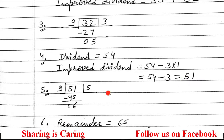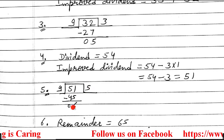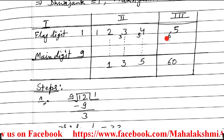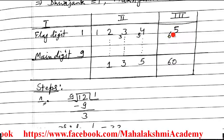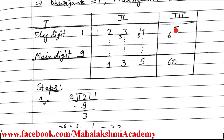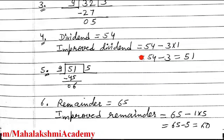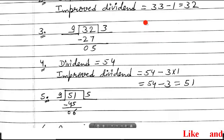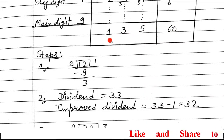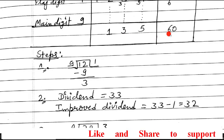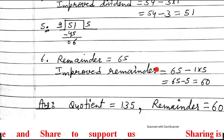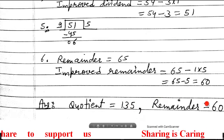Divide 51 by 9: 9×5=45, remainder 6. Quotient is 5 and remainder is 6. We have reached the remainder section. Find improved remainder: 65 minus 1×5 = 60. Enter in the table. The second section's answer is your quotient and the third section's answer is your remainder. So quotient is 135 and remainder is 60. Thank you.